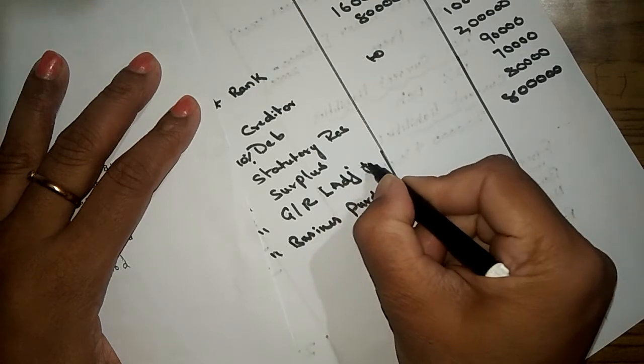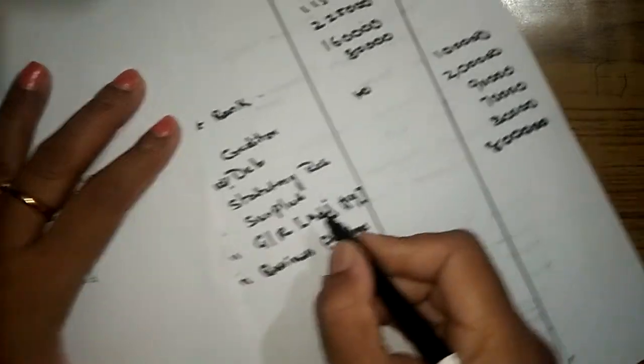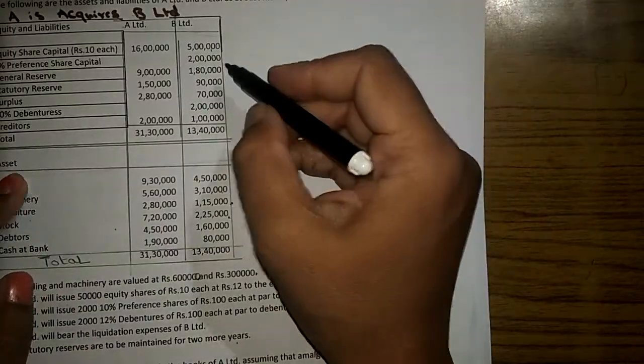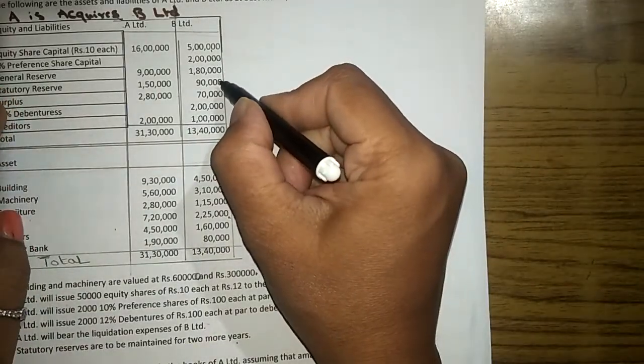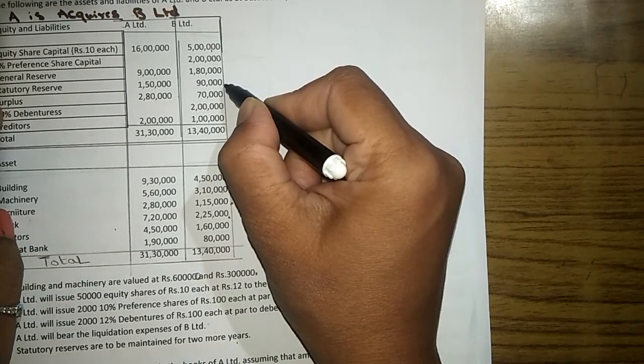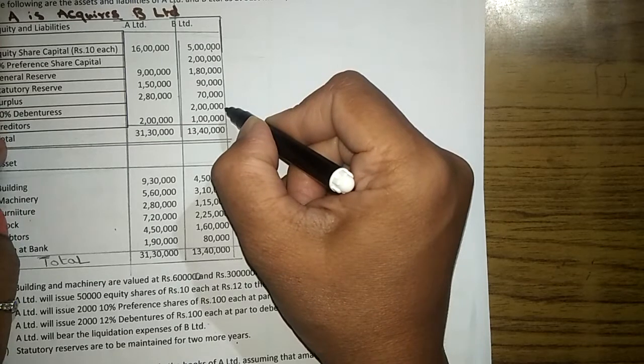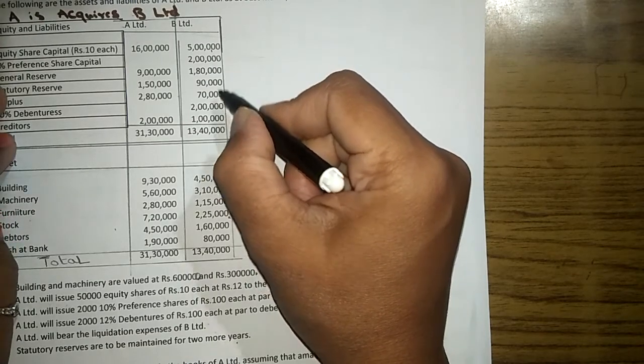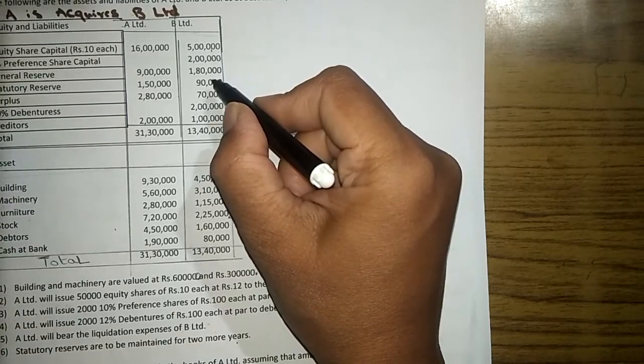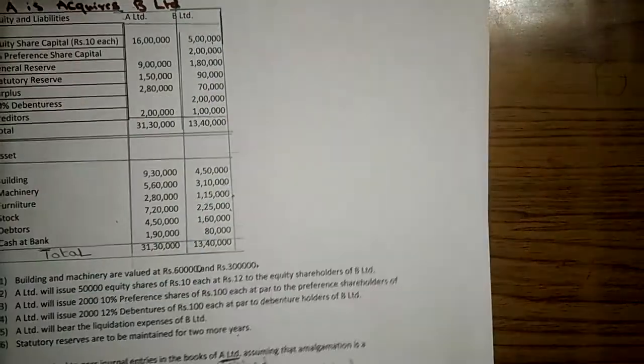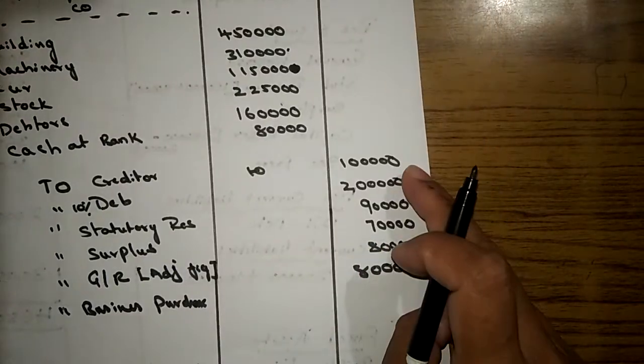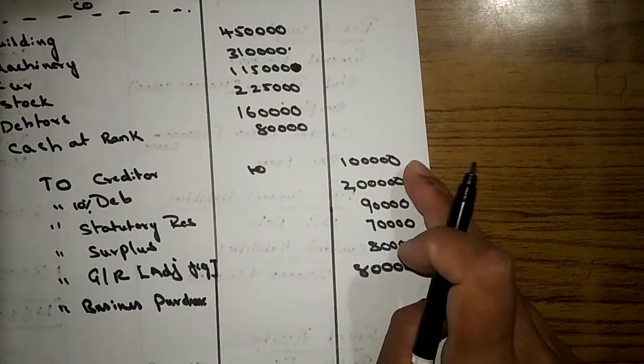Remember it's an adjusted figure. We are incorporating all the liabilities including statutory reserve, surplus, debentures, and creditors, and we are adjusting the difference amount in the general reserve. Everything should be incorporated at book value, not at market value.